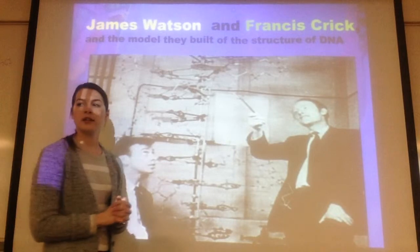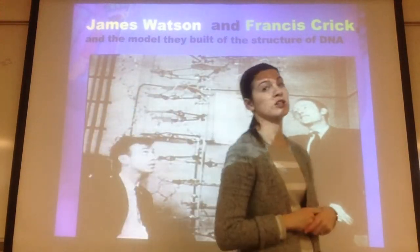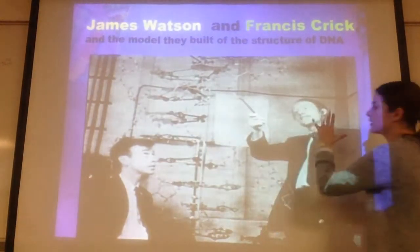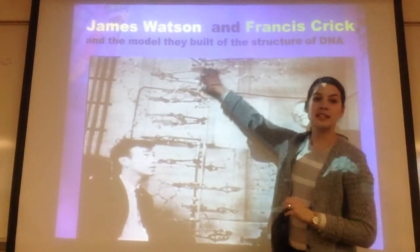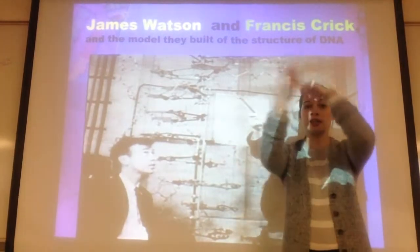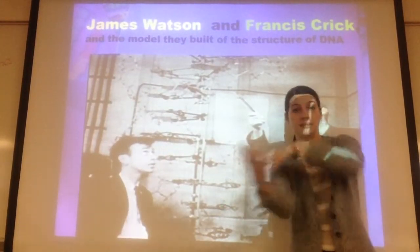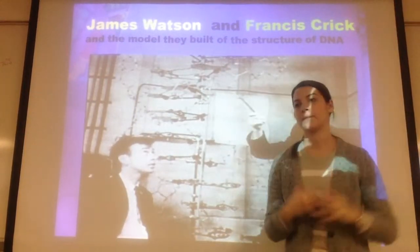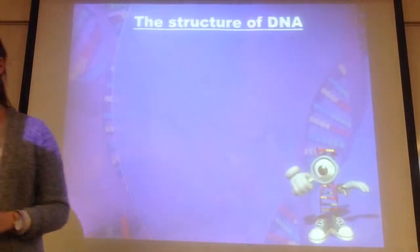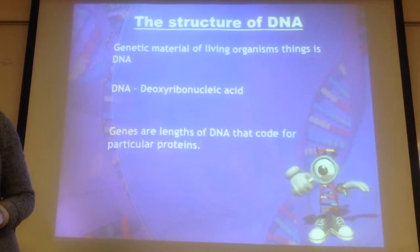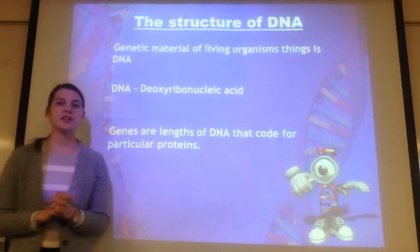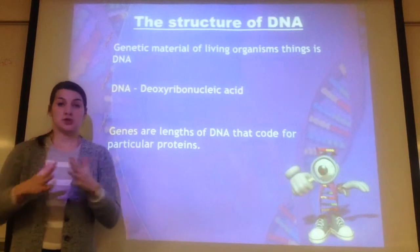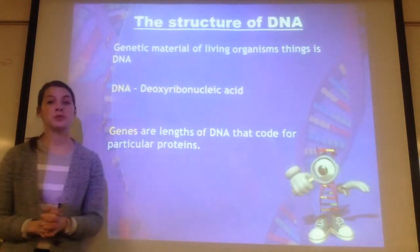Watson and Crick — James Watson and Francis Crick — are the two scientists we credit with actually coming up with the final structure of DNA. Their structure forms a double helix, like a spiral staircase, with the two sides twisting around each other. The full term for DNA is deoxyribonucleic acid — make sure you write that down.